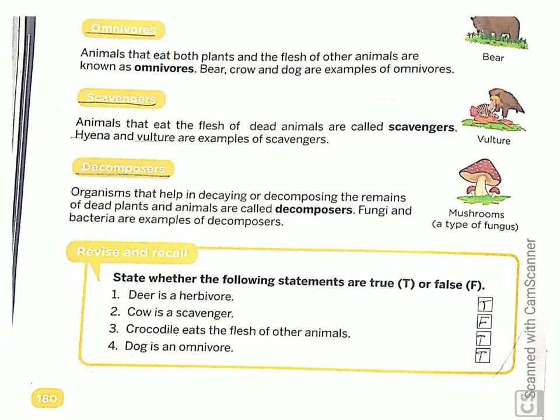And here one activity is given — revise and recall. State whether the following statements are true or false. Deer is a herbivore — true, because deer only eats plants. Cow is a scavenger — false, because cow is also a herbivore animal, cow only eats grass and plants. Crocodile eats the flesh of other animals — yes, true. Dog is an omnivore — yes, true, because it eats both plants and flesh of other animals.